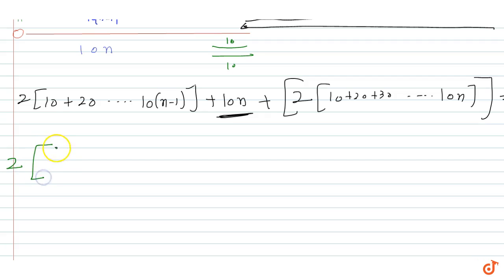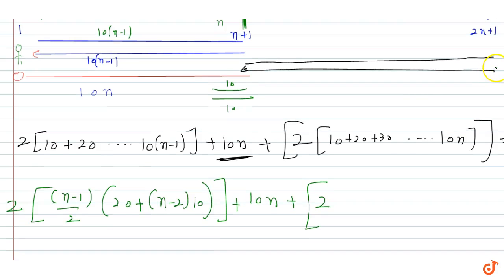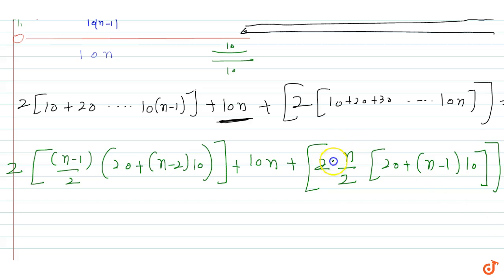This series has n-1 terms with common difference 10. The sum is (n-1)/2 times [2(20) + (n-2)(10)].